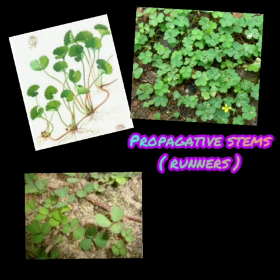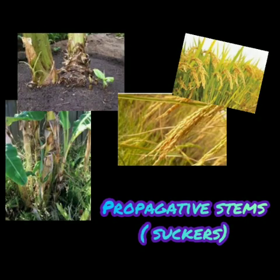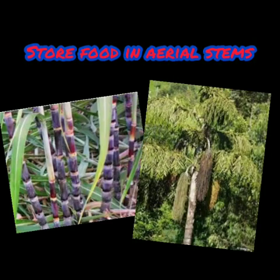Some produce new plants by runners. Example, goto color. And some produce new plants by suckers. Example, banana. The next adaptation is store food in aerial stems. Example, kitul.